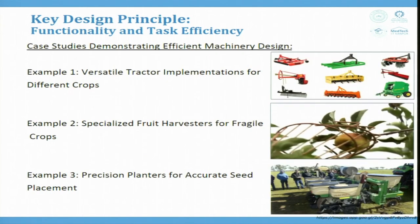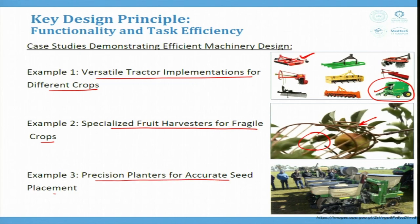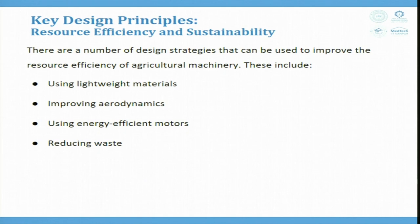Examples: versatile tractor implements can be attached to a tractor for reaping, sowing, tilling, and harvesting different crops. Specialized fruit harvesters are designed for fragile crops — a tool plucks the fruit and it falls into a basket. Precision planters enable accurate seed placement; for very large farms, seed precision planters can do the work with high precision within a controlled time limit.